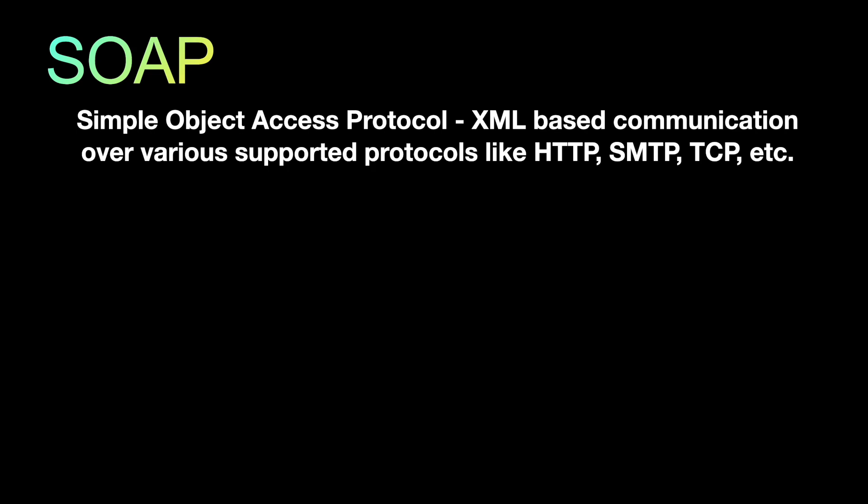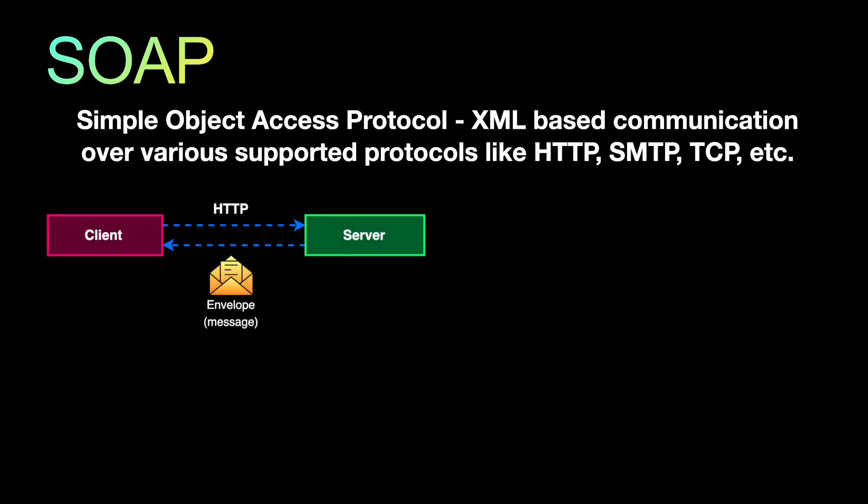The next API architecture is SOAP — Simple Object Access Protocol — which is also a very old API architecture that has been around for a long time. It is XML-based communication and supports various protocols like HTTP, SMTP, and TCP. In a SOAP API, the client and server communicate between each other, with messages following a very specific XML-based format.